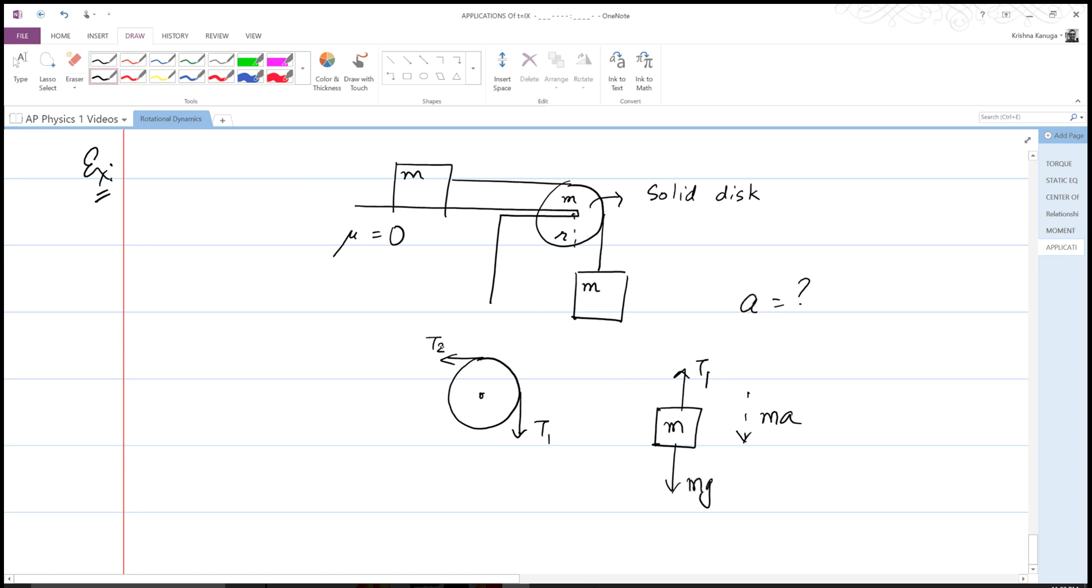And for the block on the table, I have T to the right and I have ma as a result of that. And what we also know is, assuming there's no slipping, we know that a is equal to r alpha, so I can already work with that.